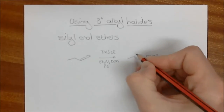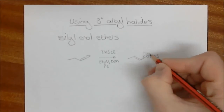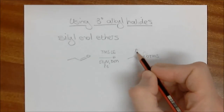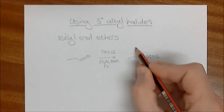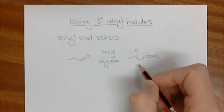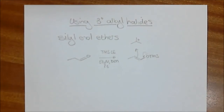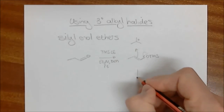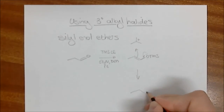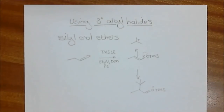Silyl enol ethers are very poor nucleophiles. We want the alpha carbon to act as a nucleophile — the enol equivalent — with lone pairs kicking in to attack an electrophile, but they are very weakly nucleophilic. So to make this happen we need to add an incredibly powerful electrophile, such as a carbocation. If you can generate a carbocation, the silyl enol ether can attack it, forming a new bond to the tertiary center, giving a product with a TMS cation leaving.